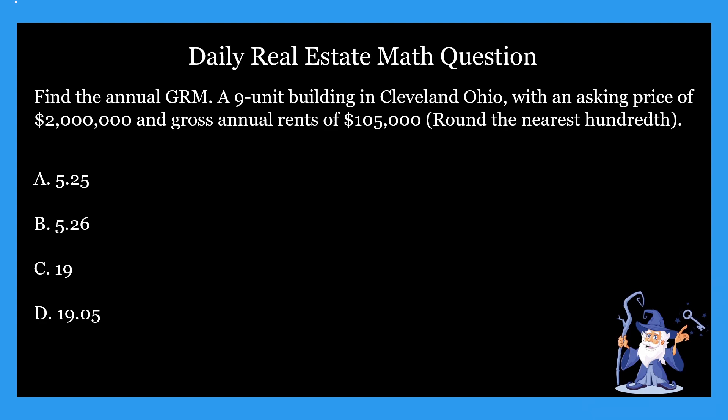All right, so the question states: find the annual GRM for a nine-unit building in Cleveland, Ohio, with an asking price of $2 million and gross annual rents of $150,000. Round to the nearest hundredth. The four answer options are: A) 5.25, B) 5.26, C) 19, and D) 19.05.